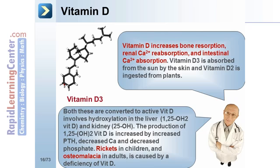Vitamin D3 is absorbed from the sun by the skin, and vitamin D2 is ingested from plants. Both are converted to active vitamin D through hydroxylation in the liver and the kidney. The production of 1,25-dihydroxyvitamin D is increased with increased parathyroid hormone, decreased calcium, and decreased phosphate. Rickets in children and osteomalacia in adults are caused by a deficiency of vitamin D.